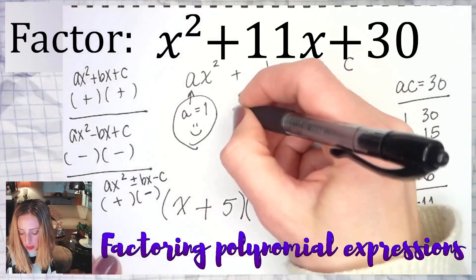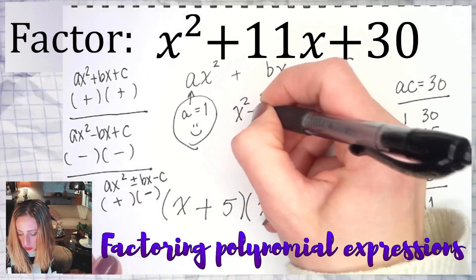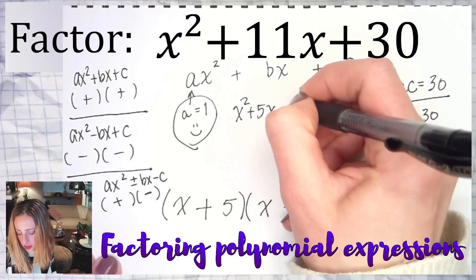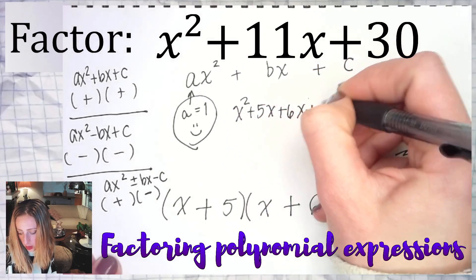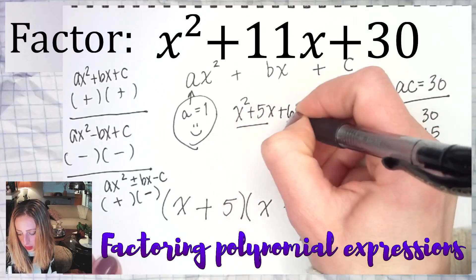However, if you're accustomed to grouping, you go ahead with x squared plus five x plus six x. You use the five and the six to split the middle. Plus 30. Underline, underline.